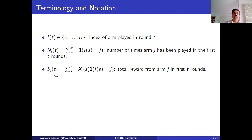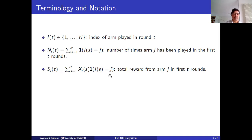S_j(t) is going to count the total number of successes from arm j in the first t time steps, which is the total reward. Every time arm j is played at time step s, we take the random reward x_j(s) and add up these rewards at those times at which arm j was played. So this is the total reward from arm j in the first t rounds, and for Bernoulli random variables, the total reward is just the number of successes.